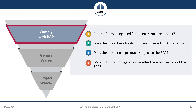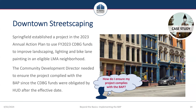To illustrate compliance with the BAP, let's examine a downtown streetscaping project. The City of Springfield is using FY 2023 CDBG funds to improve the landscaping, lighting, and to paint bike lanes on streets in an eligible low and moderate income neighborhood. The FY 2023 funds were obligated by HUD after November 15, 2022. Step one is to understand if the funds are being used for an infrastructure project.